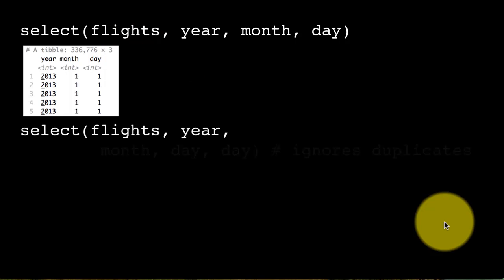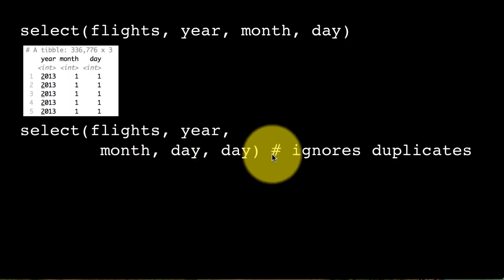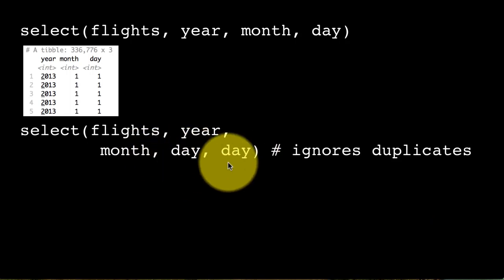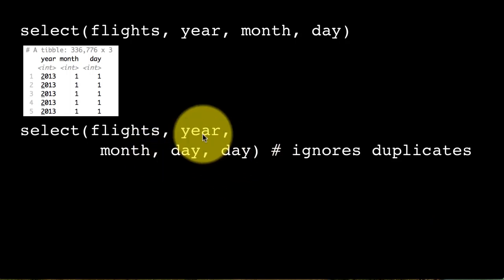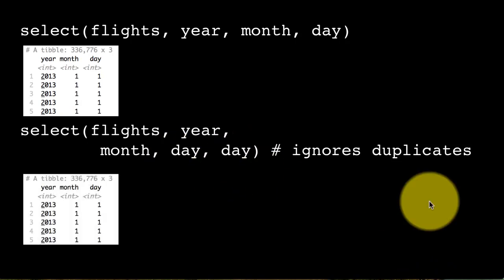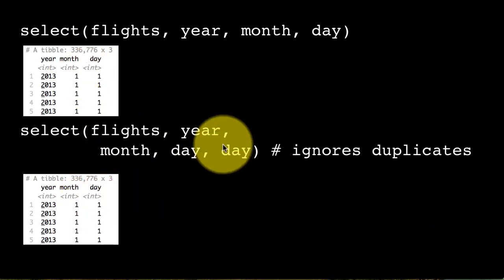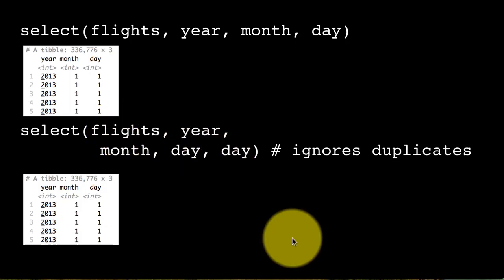That's the basic feature of select, used 90% of the time. But you can also do things like repeat a column name — say 'day' twice. The select function is intelligent enough to recognize the duplicated column and will still ignore the duplicate, giving the same result as before. We'll see shortly why this feature matters.